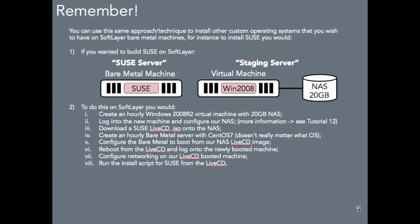SoftLayer covers six, seven, maybe eight different operating systems including versions, but they can't cover everything. So if you want SUSE, which isn't on that list, or CoreOS, or you want to go back to Windows 2000 for whatever reason, you can use this exact same technique. Rent the bare metal in the cloud and load your own OS. If there is an operating system you want to use that isn't on offer there, you can have it on the bare metal within the cloud.